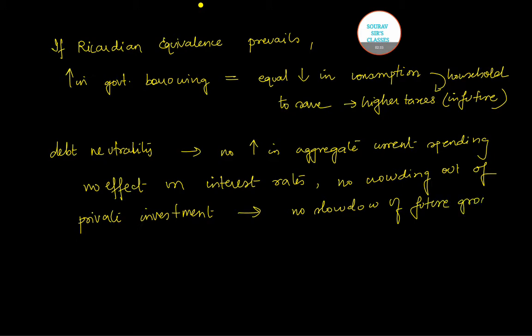Now all these variables which I have mentioned are linked to one another. So if one gets affected, the other and the chain goes on. We have done this in our previous tutorial. But here we are saying if the debt neutrality prevails...